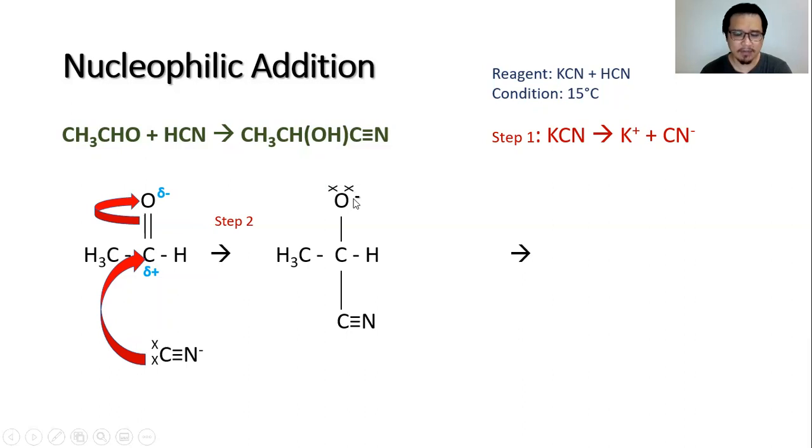This gives you the intermediate with the oxygen having a negative charge because it received an extra electron when the pi bond broke. The HCN will come into the picture now. Just like before, assign the delta positive and delta negative first.